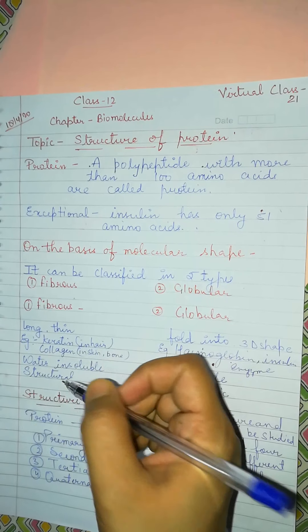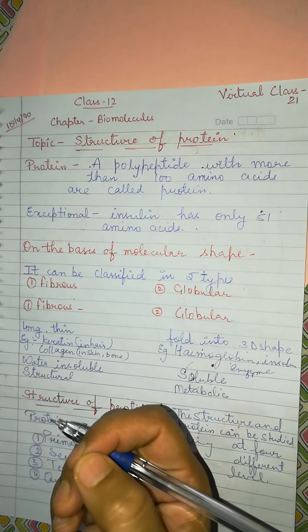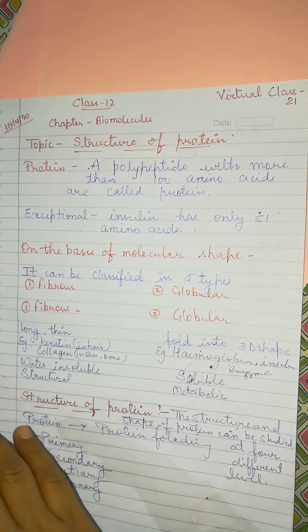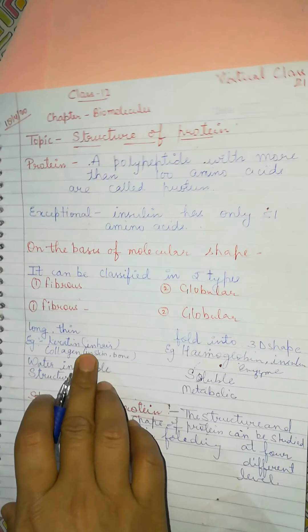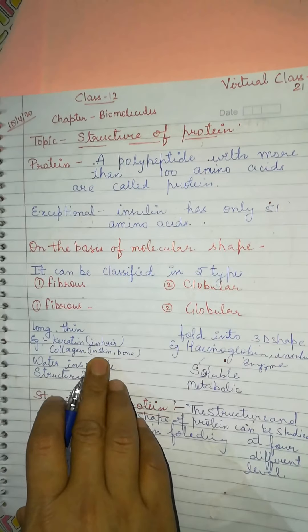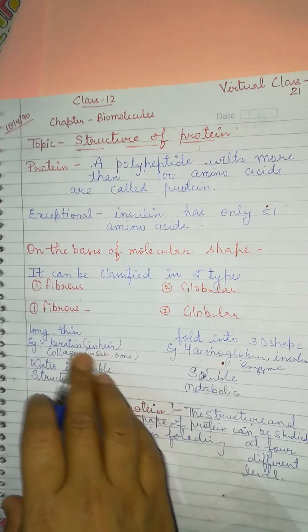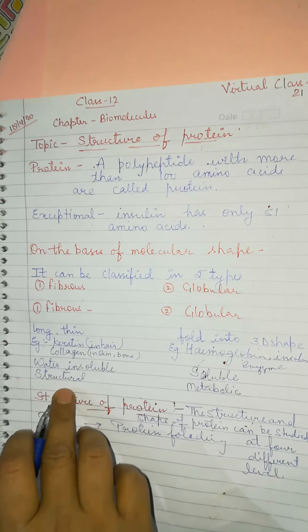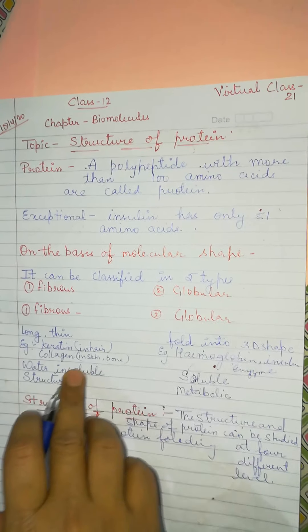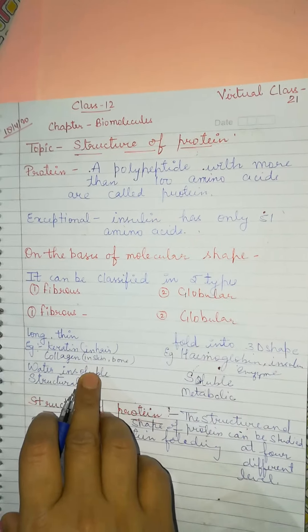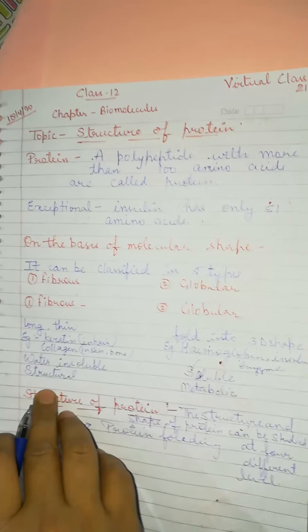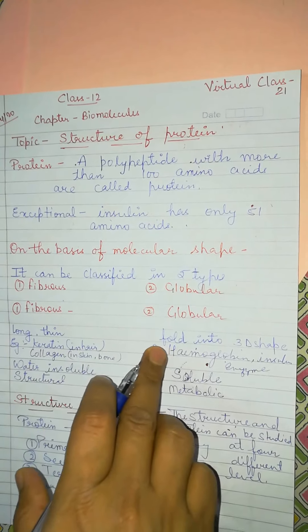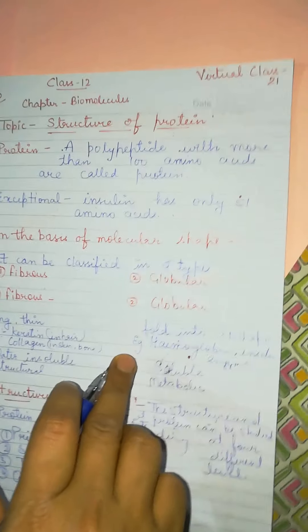Fibrous proteins are long and thin — long means elongated, thin means very slender. Water insoluble means they will never dissolve in water. The examples given are skin, bone, and hair. If these three were soluble in water, how could we get our structure? If hair dissolved as soon as it went into water, what would be the point? So these all are insoluble in water, but globular proteins are soluble in water.